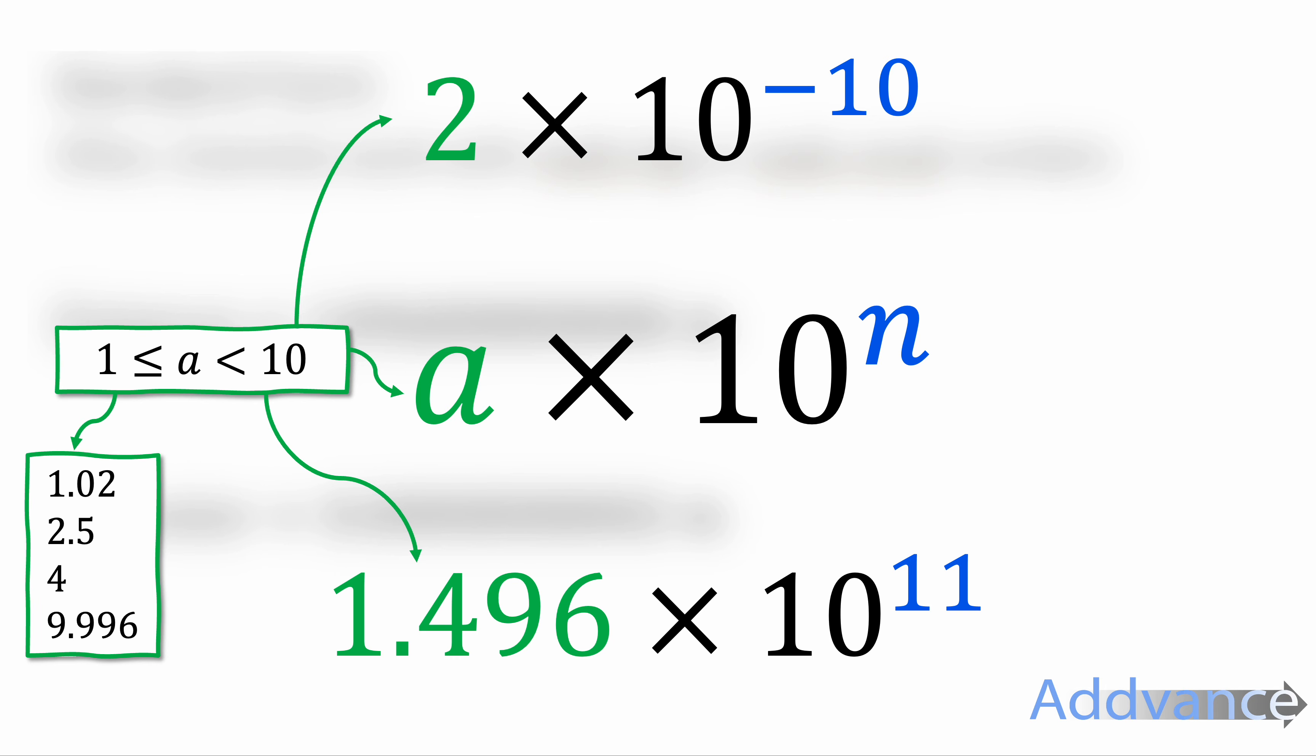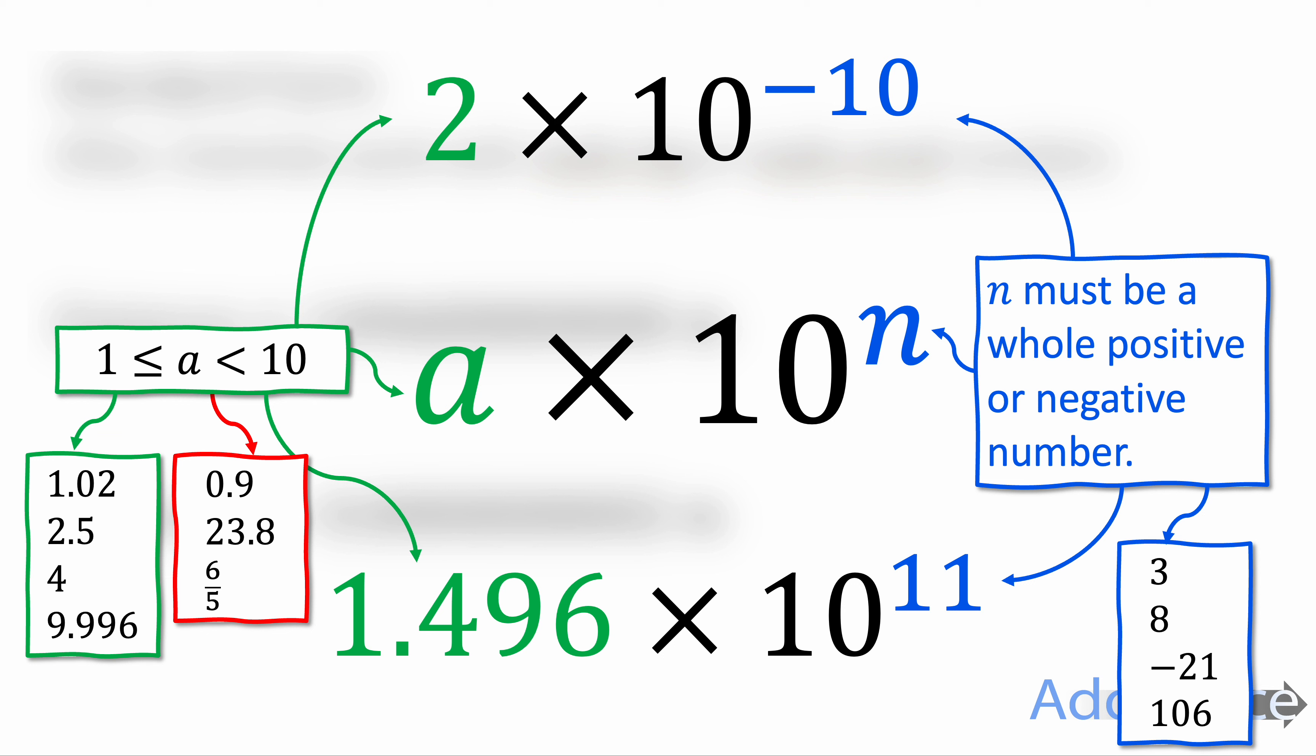Standard form looks like this where it's some number times 10 to the power something, where the number at the start is a number between 1 and 10. It can be 1, it cannot be 10, and it can be a decimal. For example, it can be 1.02, 2.5, 4, and 9.996. It cannot be 0.9, that's not between 1 and 10, 23.8, and it can't be fractions either, it can't be 6 fifths.